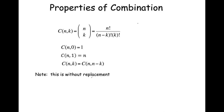Some basic properties of combination: N choose 0 equals 1 — there's only one way to choose nothing. N choose 1 equals N — there are N ways to choose one item. And N choose K equals N choose (N−K), which falls out very naturally from the formula. These are without-replacement combinations.